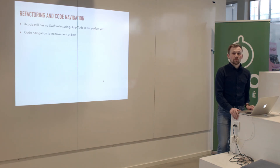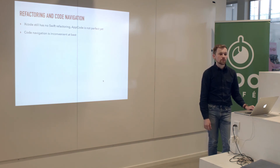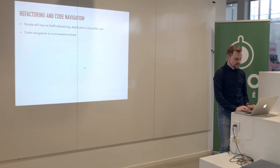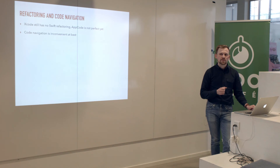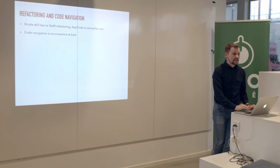A similar problem exists with code navigation. If you try to go to the definition of a method or property, both Xcode and AppCode take you to the protocol. From there, Xcode cannot take you to the actual implementation — AppCode can, but it's still one extra step so it's not that convenient. With find usages, Xcode has only a rudimentary form in the assistant editor, while AppCode has a proper find usages feature which helps a bit.